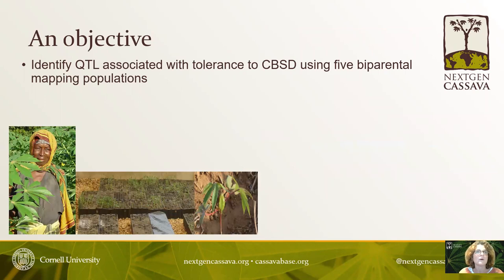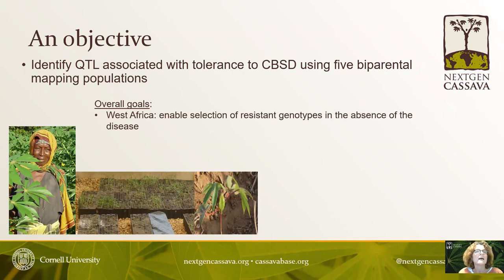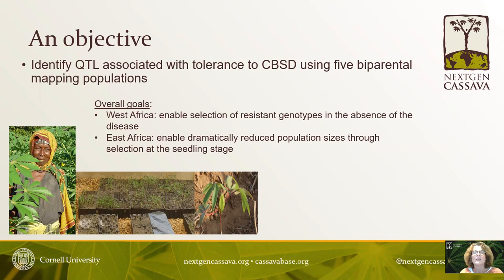A major objective of this project was to identify QTL associated with tolerance to CBSD using five bi-parental mapping populations. The overall goal for West Africa was to enable breeding using markers in the absence of the disease. In East Africa, where we can challenge populations to CBSD, the goal was to enable selection at the seedling stage, dramatically reducing population sizes and adding precision through marker-assisted selection.